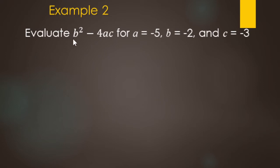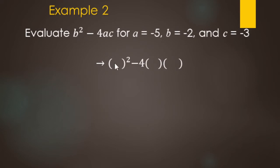Let's evaluate b² minus 4ac for when a equals negative 5, b equals negative 2, and c equals negative 3. We replace b, a, and c with what they're equal to. So b squared becomes negative 2 squared, the a becomes negative 5, and c becomes negative 3. Now we're ready to do order of operations.